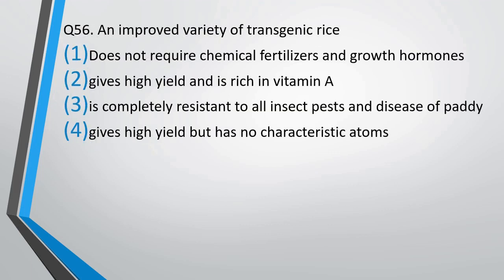Question number 56: An improved variety of transgenic rice — does not require chemical fertilizer and growth hormones; gives high yield and is rich in vitamin A; is completely resistant to all insect pests and diseases; or gives high yield but no other characteristic? The correct answer is option 2 — it gives high yield and is rich in vitamin A.